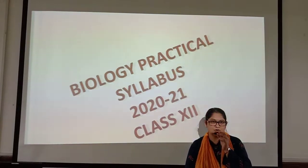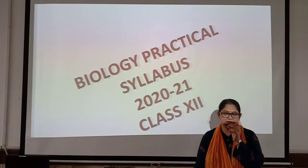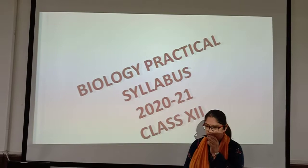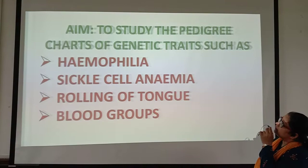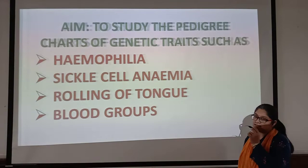Good morning students. I am here to explain an experiment which belongs to section B, and that is spotting. Today's spot is to study the pedigree charts of genetic traits such as hemophilia, sickle cell anemia, rolling of tongue, and blood groups.